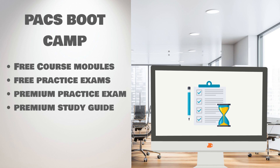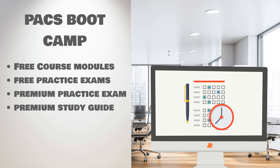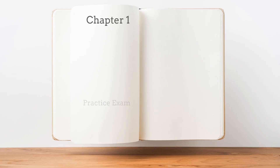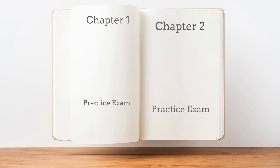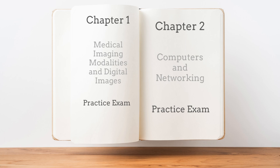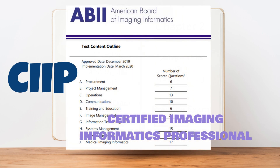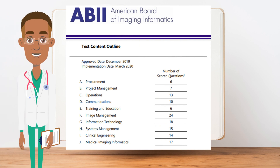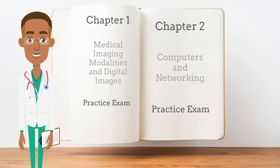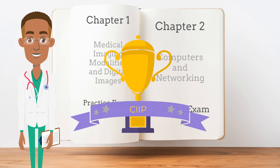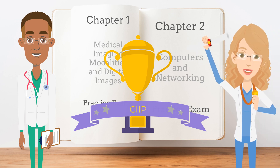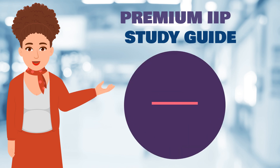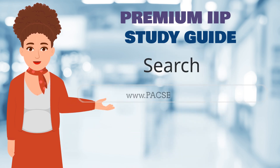PACS Bootcamp offers a premium CIIP study guide based on the ABII test content outline. The guide builds upon the March 2020 ABII outline by providing additional context to each subtopic, with individual topics summarized into short and concise descriptions. This imaging informatics professional study guide has been approved by the American Society of Radiologic Technology for three and a half hours of category A continuing education credits.